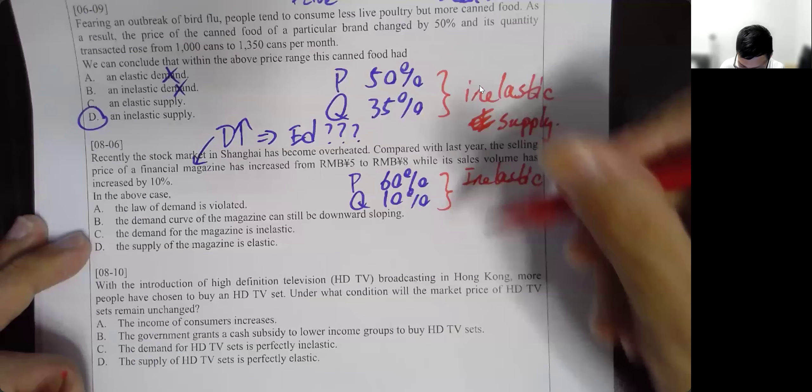During Easter, the unstable political situation in Thailand caused the price of air tickets to fall. Demand for Thailand tickets decreased — do we know anything about ED? No. Price fell by 50% and quantity fell by 70%. Since quantity percentage is higher than price percentage, we call this elastic supply. Answer: C.